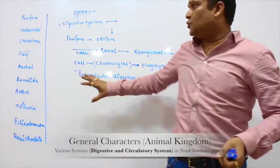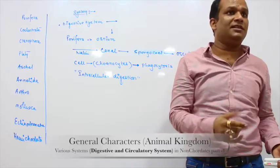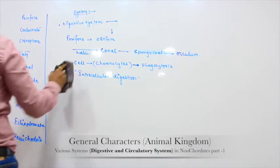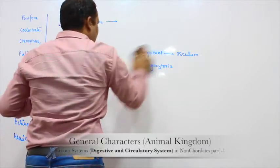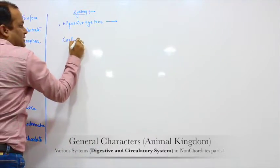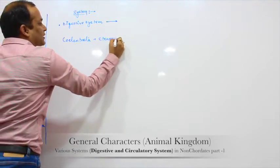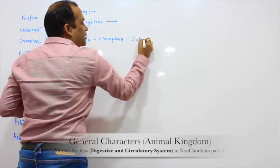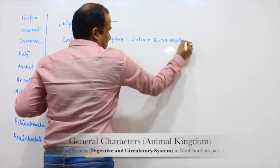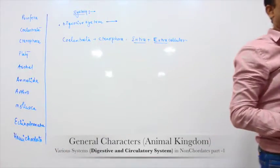So generally, the question asked about Porifera is: which type of digestion is found? The digestion is intracellular — that is, within the cell. In case of Coelentrata and Ctenophora, both intracellular and extracellular digestion is found — both types of digestion. This is very important.